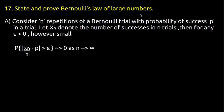Bernoulli's Law of Large Numbers: Consider n repetitions of a Bernoulli trial with probability p of success in a trial. Let XN denote the number of successes in n trials. Then for any epsilon greater than 0, however small, the probability of the modulus of XN/n minus p being greater than epsilon tends to 0 as n tends to infinity. This is the statement of Bernoulli's Law of Large Numbers.